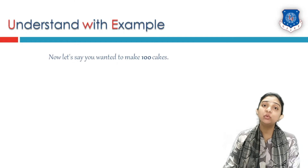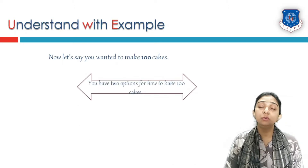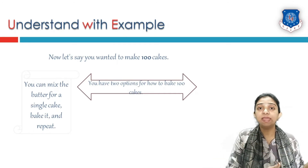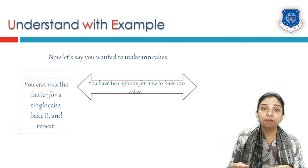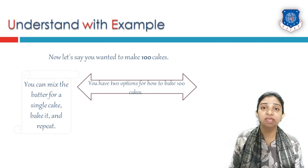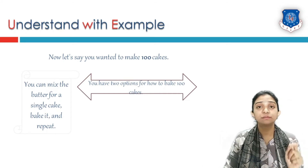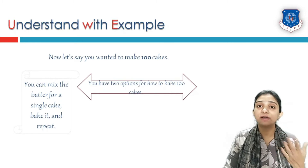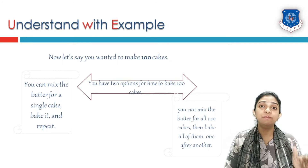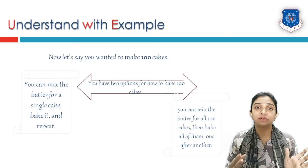Now consider you don't want to bake just one cake but 100 cakes for the competition. You have two choices. The first choice is to mix the batter of one cake, bake it in the oven, and once it is done, mix another and bake it — doing all operations serially. The second option is to mix the batter of all 100 cakes together, then bake one cake at a time in the oven, since the oven can only fit one cake at a time.